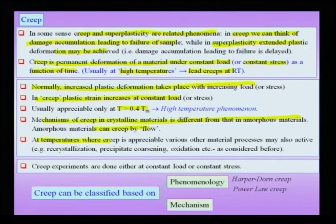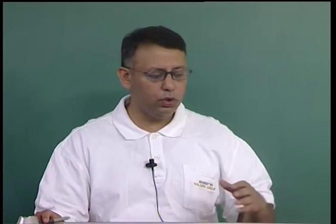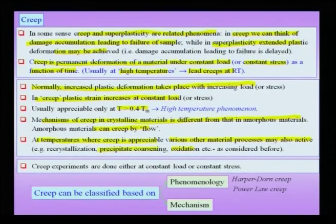At temperatures where creep is appreciable, various other material processes may also become active, such as oxidation, precipitate coarsening, and recrystallization, which can complicate or corrupt creep data. Creep experiments are conducted at either constant load or constant stress, and creep can be classified based on phenomenology — for example, power-law creep or Harper–Dorn creep — or mechanistically, which will be the focus here.